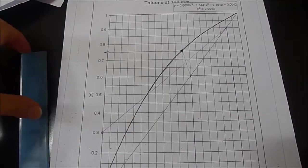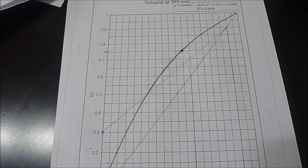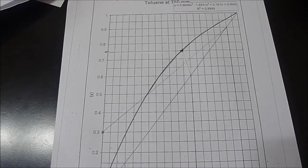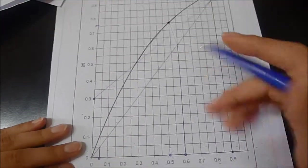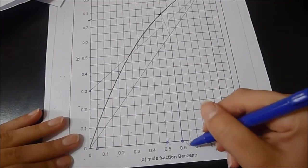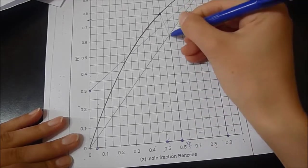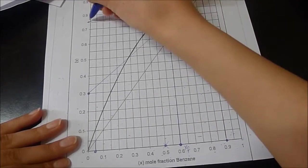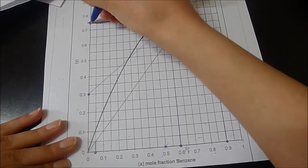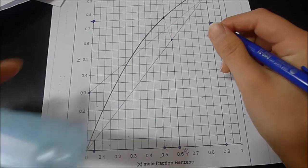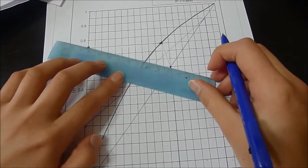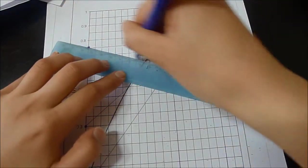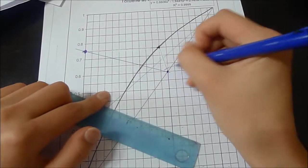6 over 8 is 0.75. Let's draw our Q line. Since the Q line Y intercept is 0.75, we go from XF 0.6 until the diagonal line, and we have this intercept. So we need to connect these two dots.